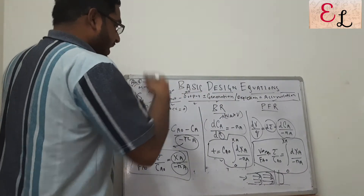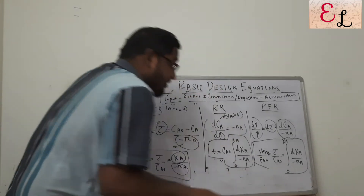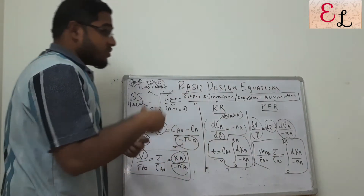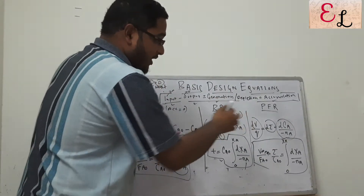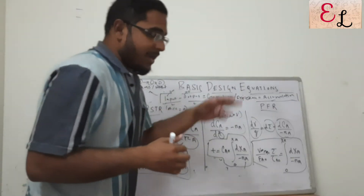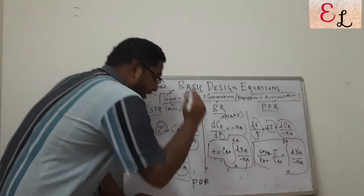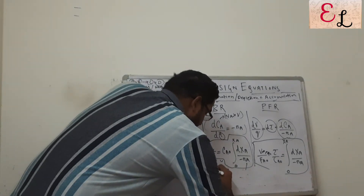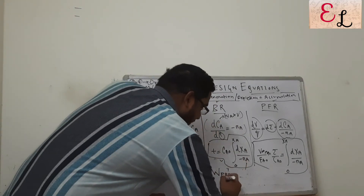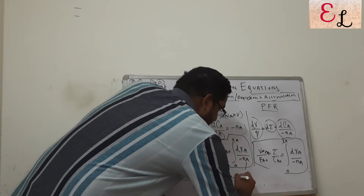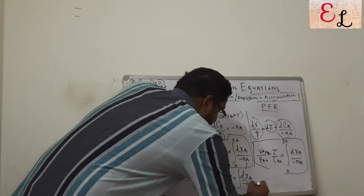So we have the three equations: CSTR, BR, and PFR. The fourth equation is for the PBR — packed bed reactor. The design equation is: weight of catalyst W divided by NA0 equals the integral from 0 to XA of dXA divided by minus rA. The key difference is that instead of volume of the reactor, we use weight of the catalyst or catalyst bed weight, because there is a void fraction in packed beds, making volume less significant.